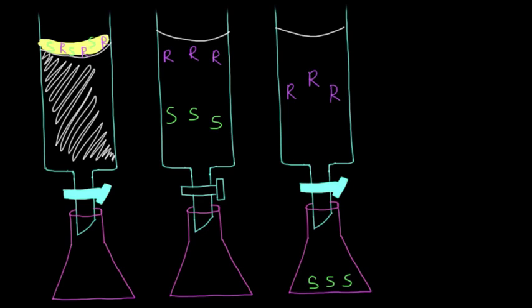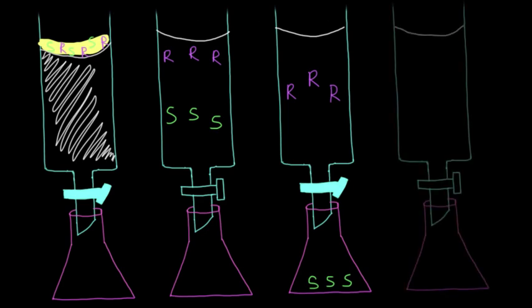Next, when you have this column, you'd want to pour in lots of solvent so that you can get the R enantiomer to come out. Because as this pushes down through the column, it will take the R enantiomer with it, giving you just the R enantiomer in your flask. And there you've done a successful chiral resolution.